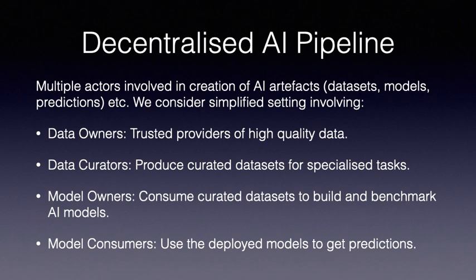We will consider the simplified setting involving four types of participants. First we have data owners. These are parties which are trusted sources of data. Then we have data curators. These are organizations which collate and process trusted datasets to produce curated datasets for specialized AI tasks, say for specific model training or benchmarking. Next we have model owners who build and benchmark models using created datasets. And finally we have model consumers who use provided models to obtain predictions.